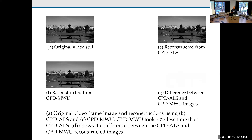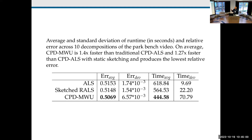In another example from a park bench video, CPD-MWU took 30% less time and the difference in quality is basically zero. Looking at the numbers from the park bench video: CPD-MWU outperforms both ALS and sketched regularized ALS, where we used the best fixed sketching rate in hindsight. We ran the optimization for different sketching rates, picked the best result, and compared to CPD-MWU which chooses the sketching rate online. Even accounting for standard deviations, CPD-MWU is faster.